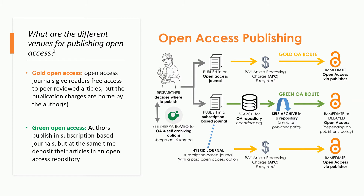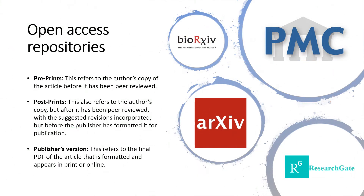Authors should, therefore, check the website of their target journal to find out whether self-archiving is allowed, and preferably take the journal's permission before self-archiving. Open access repositories can be institutional or independent, subject-specific — such as bioRxiv, Nature Proceedings, and PubMed Central — or multidisciplinary, such as arXiv.